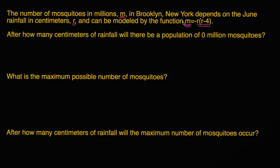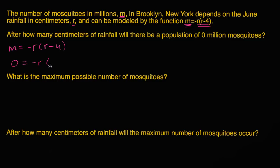All right. Now let's see if we can answer these questions. The first one: after how many centimeters of rainfall will there be a population of zero million mosquitoes, or just no mosquitoes? Well, let's just rewrite this function. My population of mosquitoes in millions is going to be negative r times r minus 4, where r is the number of centimeters of rainfall. So in order to have a zero million population, m is going to have to be equal to zero. We need to figure out at what values of r is m equal to zero, so we just have to solve this.